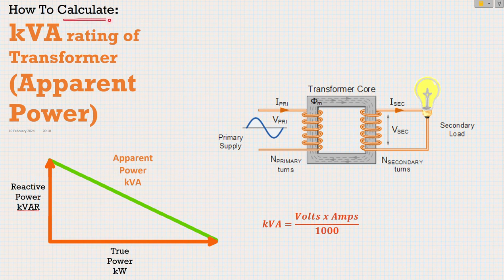Alright, so we're going to look in this video at how to calculate the kVA rating of a transformer, also known as our apparent power.